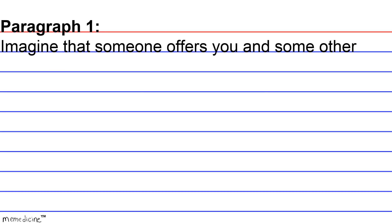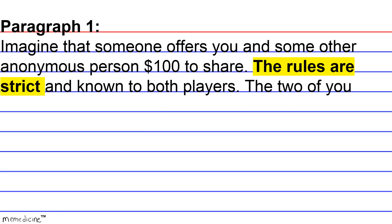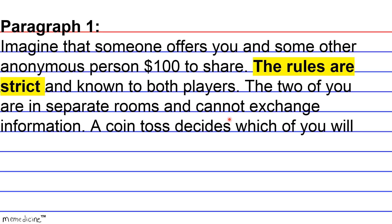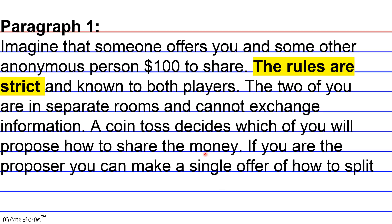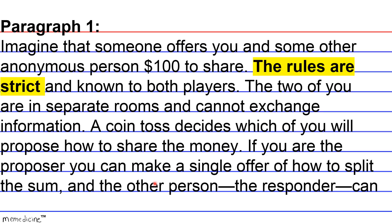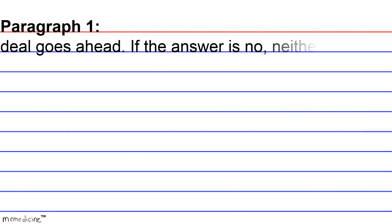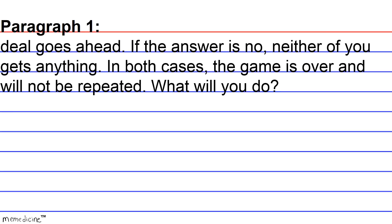Paragraph 1. Imagine that someone offers you and some other anonymous person $100 to share. The rules are strict and known to both players. The two of you are in separate rooms and cannot exchange information. A coin toss decides which of you will propose how to share the money. If you are the proposer, you can make a single offer of how to split the sum, and the other person — the responder — can say yes or no. If the responder says yes, the deal goes ahead. If no, neither of you gets anything. In both cases, the game is over and will not be repeated. What will you do?